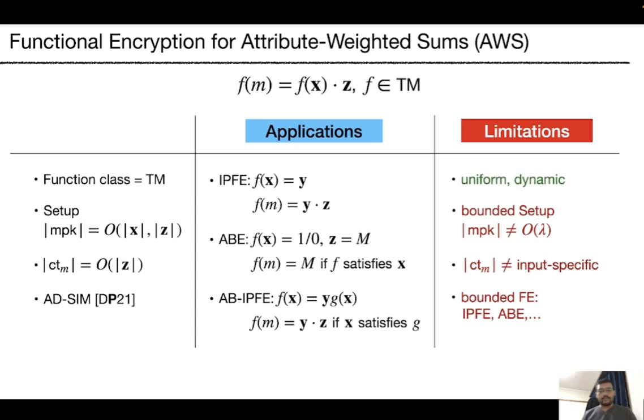Firstly, we can consider uniform model of computation such as Turing machines. Setup could be made unbounded, that is, MPK only depends on security parameter. The ciphertext size is input specific. We also hope to have adaptive simulation security. This is exactly the motivation of our work.